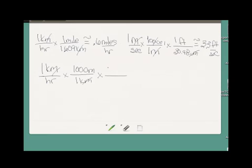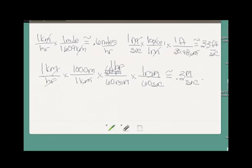Now, let's get rid of the hours. I know that in 1 hour there are 60 minutes. And in 1 minute there are 60 seconds. And so that works out to be about 0.3 meters per second, or 0.28 meters per second. In other words, 1 kilometer per hour is about a third of a meter per second.